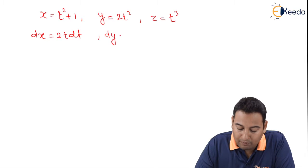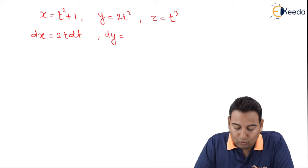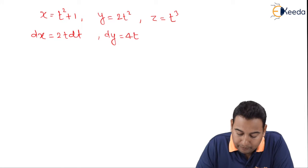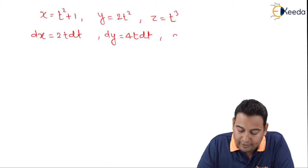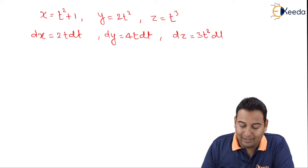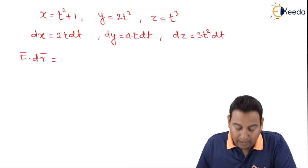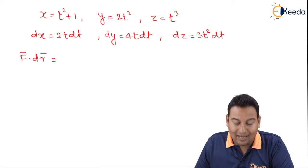dy will be 2 constant, t square is 2t, that means 4t dt. dz is 3t square into dt.